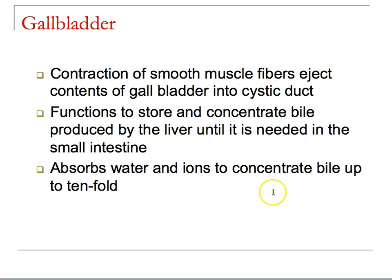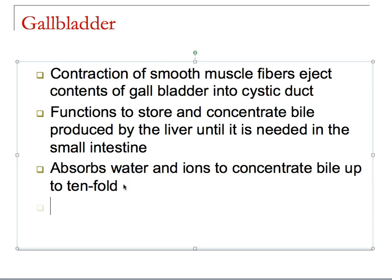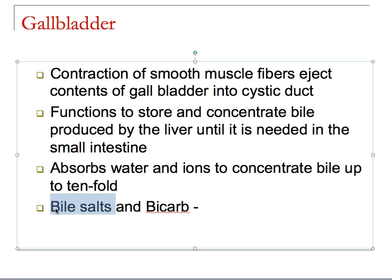The gallbladder concentrates whatever is being made inside the liver — roughly tenfold — so it can actually function. The key components are bile salts and bicarbonate. Bile salts increase the surface area of fats — we call this emulsification. Bicarbonate offsets the pH of the chyme as it comes in from the stomach.